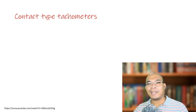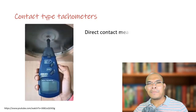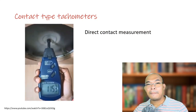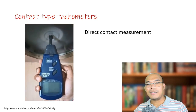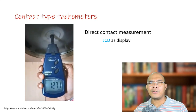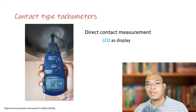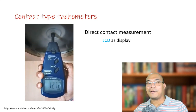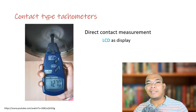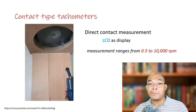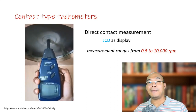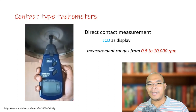The first type of digital tachometer is the contact type device, which requires direct contact with the object being measured. This device uses an LCD as a display. The operational temperature ranges from 0 to 40 degrees Celsius, storage temperature ranges from negative 20 to positive 55 degrees Celsius, and the rotating speed measurement ranges from 0.5 to 10,000 RPM — though this will always vary depending on the specification of the device.